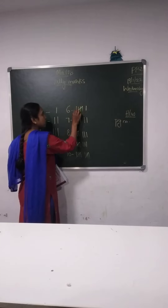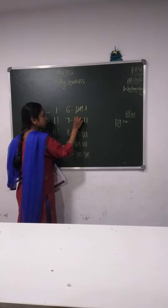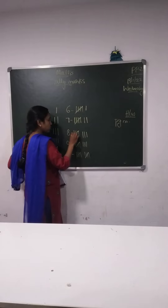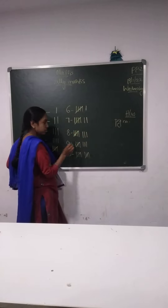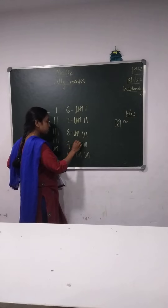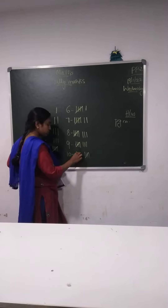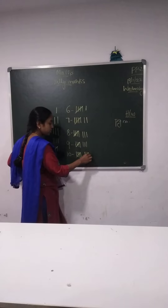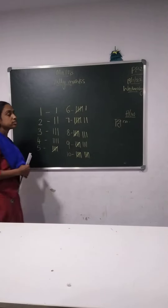Now next — 6: 1, 2, 3, 4, 5, 6. Then 7: 1, 2, 3, 4, 5, 6, 7. Next is 8: 1, 2, 3, 4, 5, 6, 7, 8. Then 9: 1, 2, 3, 4, 5, 6, 7, 8, 9. And 10: 1, 2, 3, 4, 5, 6, 7, 8, 9, 10. For 5 we will draw a slash line here. So this is called tally marks.